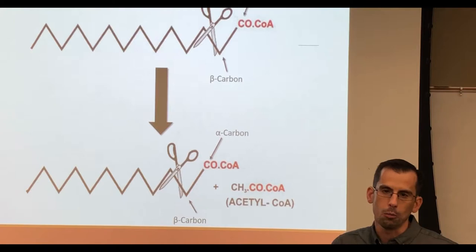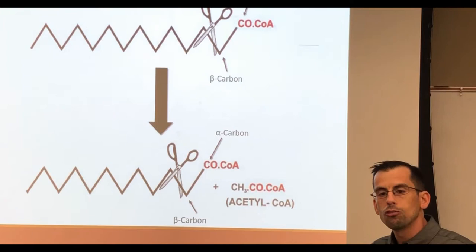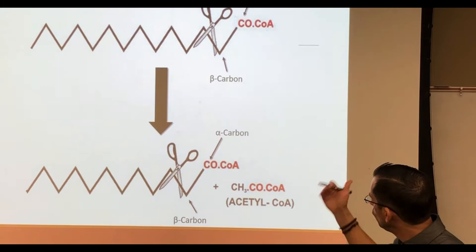We converted that pyruvate into a different three carbon molecule that we've already discussed from Krebs: acetyl-CoA. Each of these molecules that we clip off every time we do a cycle of beta oxidation is a three carbon acetyl-CoA molecule. We use acetyl-CoA as a starting point for our Krebs cycle. So just like glycolysis continued into Krebs, so will beta oxidation.